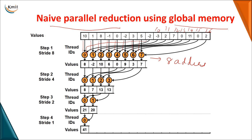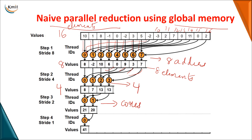Once you perform the addition operation — with an original problem size of 16 elements — by employing eight adders you reduce the problem size to eight. In the next step you employ four adders; elements five through eight serve as the second inputs, reducing the problem size from eight to four. Then from four elements you apply two cores, and summing those gives your final result. This is your naïve parallel reduction using global memory.